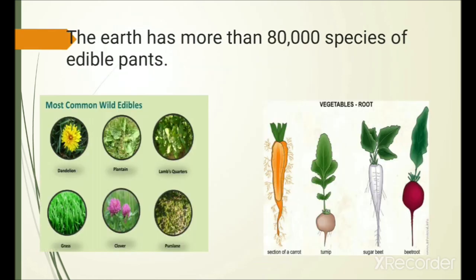The earth has more than 80,000 species of edible plants. Some examples have been given here. How much edible plants? More than 80,000 species of edible plants.